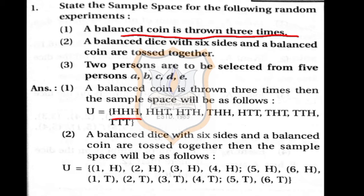Second, you can get head on the first two and tail on the third: H, H, T. You can get head on first and third, tail on second: H, T, H. You can get tail on first and two heads on the others: T, H, H. So these three cases have two heads.